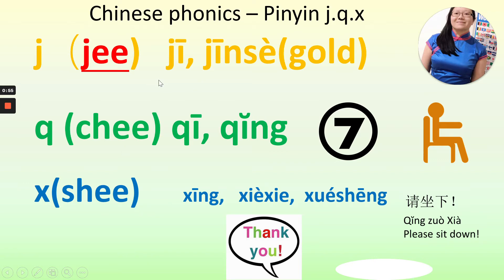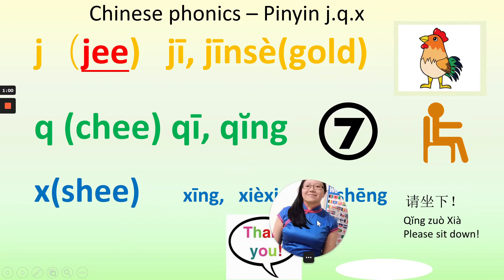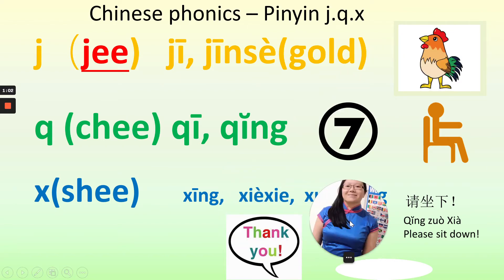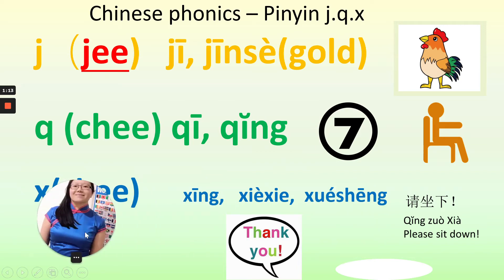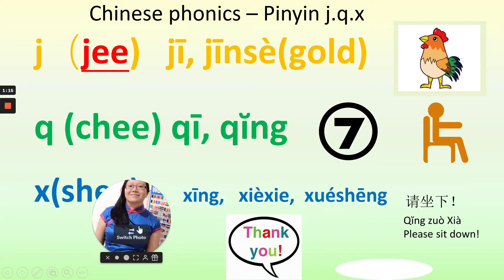So as in j, we've learned the chicken for j. And we have also learned jin se for gold, and qi as in number seven, qing meaning please. And xing as in star, and also xie xie meaning thank you. And xue sheng meaning student. Qing zuo xia — they all have that j/q/x sound.